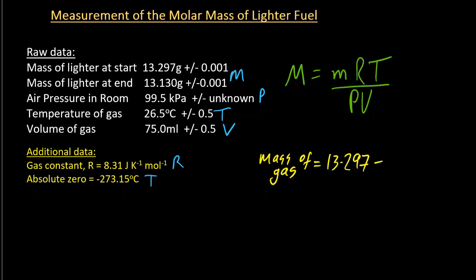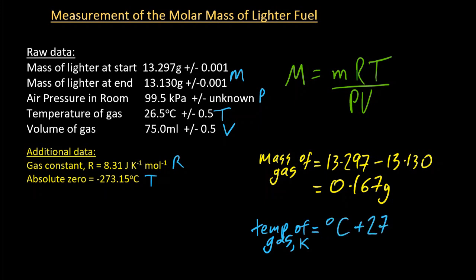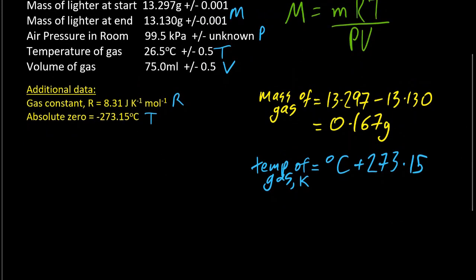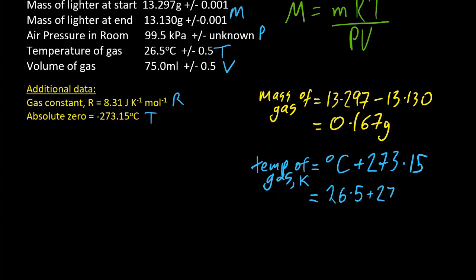So the mass of the gas is simply the initial mass minus the final mass. The temperature of the gas, well, you have to use that equation. I'm using two decimal places just to show off that I know it. And so the Kelvin temperature is 299.65 Kelvin.